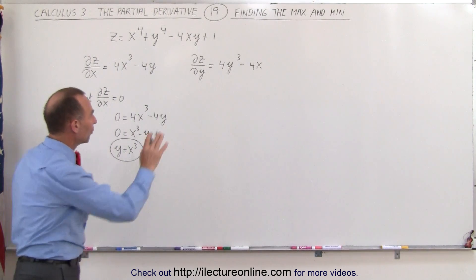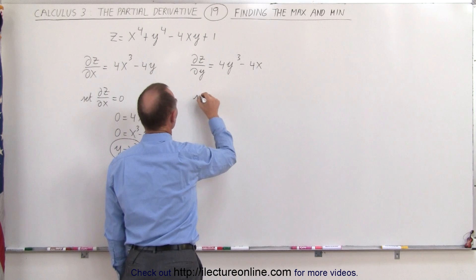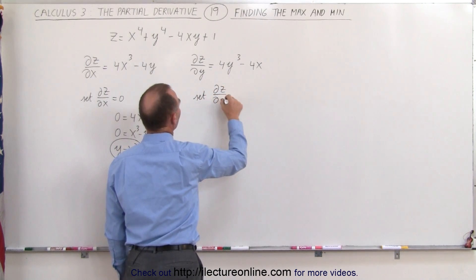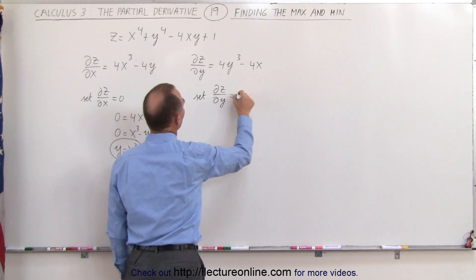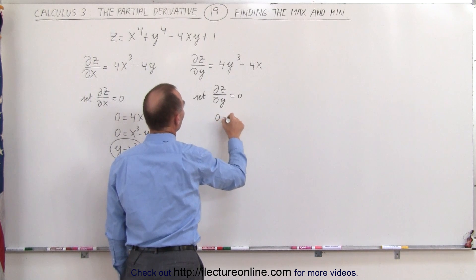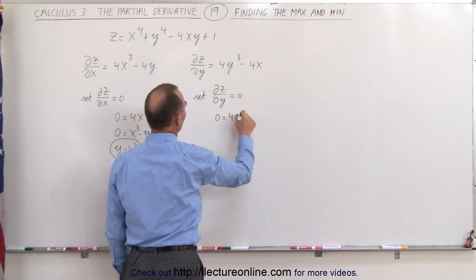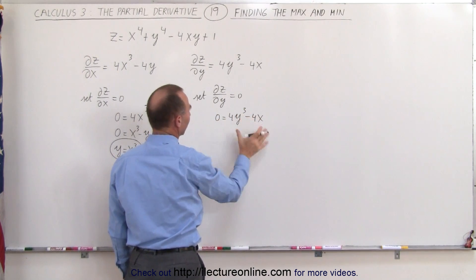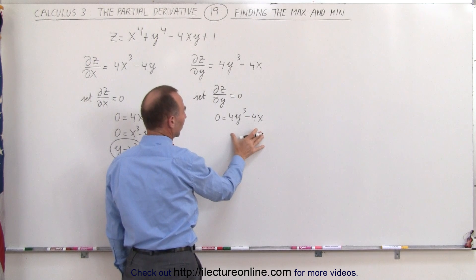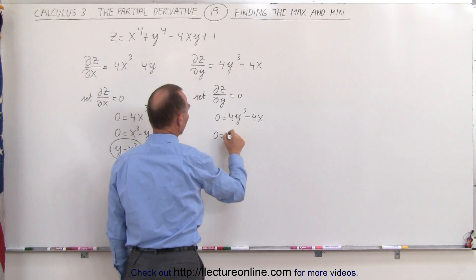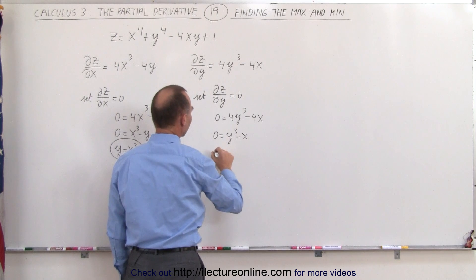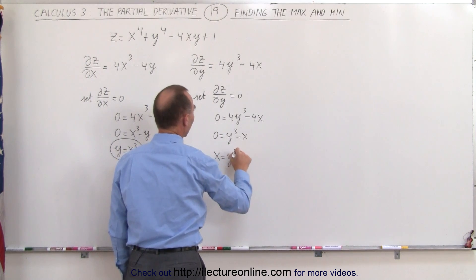Now we're going to set the partial of z with respect to y equal to 0, which means 0 equals 4y cubed minus 4x. Again, dividing both sides by 4, we get 0 equals y cubed minus x, or x equals y cubed.